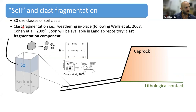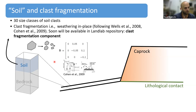The soil layer is represented by 30 size classes of soil fragments or clasts. We include an important feature of arid slopes, which is clast fragmentation. We adopt the concept of Wells and Cohen for soil fragmentation, built mainly on a transition matrix that transfers mass of clasts from one specific size fraction to another. We hope that soon our version of this model will be freely available in the Landlab repository.